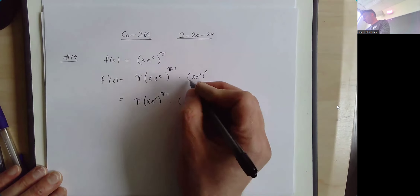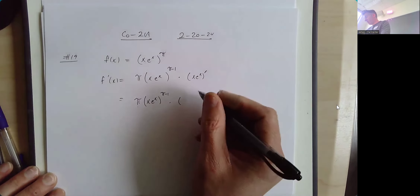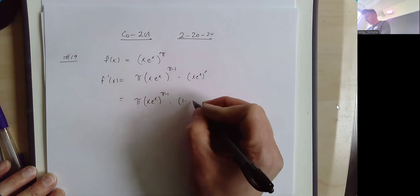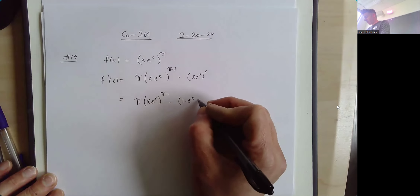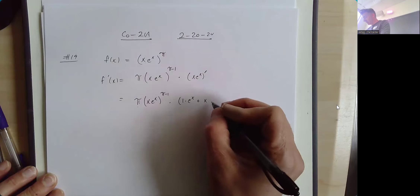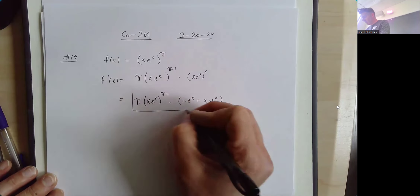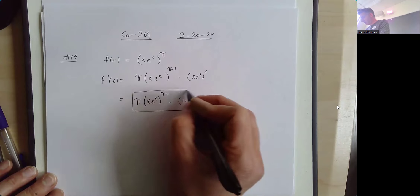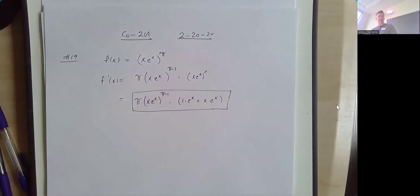Now we use the product rule for the derivative of the inside. The derivative of x is one times leave the e to the x alone, plus we leave the x alone and the derivative of e to the x is e to the x. And that is how we find the derivative of x e to the x to the pi power.